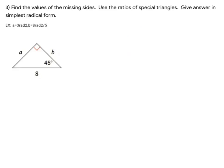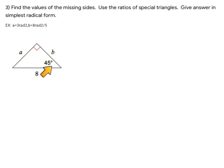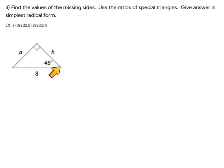Let's get into special right triangles. Here we're looking for the lengths of the two missing sides in simplest radical form. This triangle is a right triangle with a 90-degree angle and a 45-degree angle. Using the triangle sum theorem, 90 plus 45 is 135, and subtracting from 180 gives us 45 for the third angle. This is actually a 45-45-90 triangle — a special right triangle.